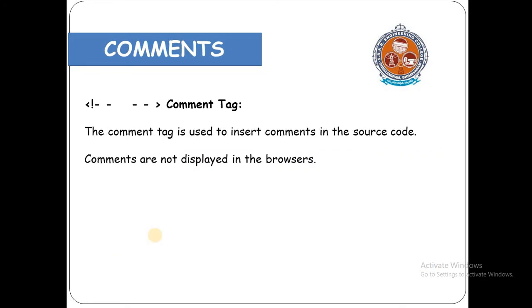The next main element is the comment tag. In every language there is a comment tag. The main purpose of the comment tag is to insert comments in the source code — it will be ignored by the browser and will not be displayed. For a good programmer, the comment tag must be used to explain what the code does, and for debugging it is very easy to find errors.